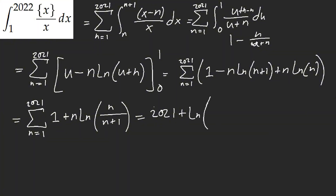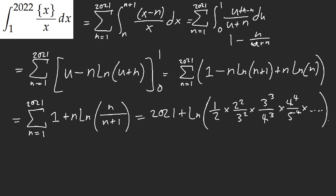We have like, well, this is like 1. If I plug in n equal to 1, we get 1 over 2, and then times we get 2 squared over 3 squared. And then we get 3 cubed over 4 cubed, 4, 5 over 4, and this just keeps repeating on and on. Can we simplify that? And this whole portion is going to cancel out.